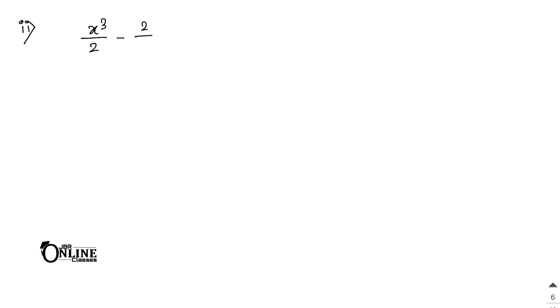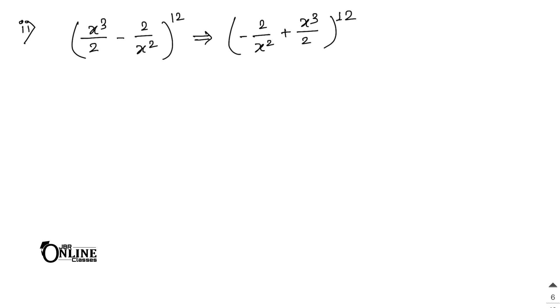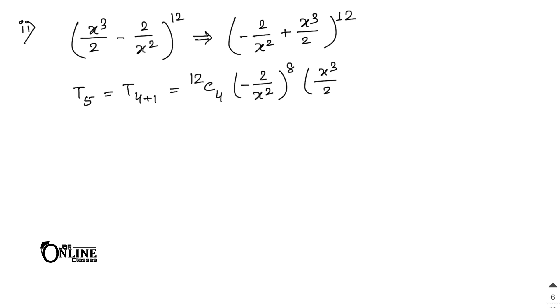Sum number 7.2: what is the index of the power of x in the fifth term from the end of (x³/2 − 2/x²)^12? When finding a term from the end, reverse the expansion to (−2/x² + x³/2)^12. The fifth term is T_{4+1}: 12C4 × (−2/x²)^8 × (x³/2)^4.